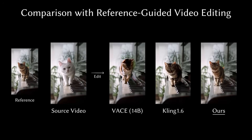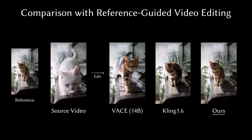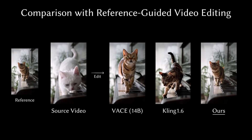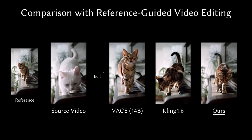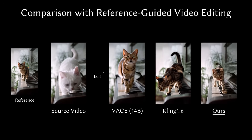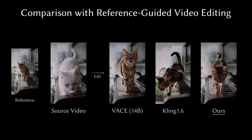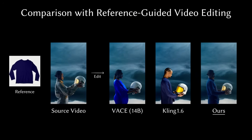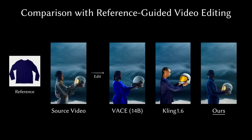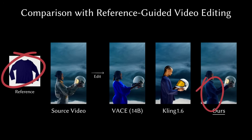Here's a comparison. You've got the input cat photo, the source video, and look how LoRaEdit compares to VASE and CLING. Theirs look muddy and distorted, but LoRaEdit's result keeps the cat's fur pattern sharp and consistent. Plus, the way the cat moves is more similar to the source video compared to the rest. And again, changing the shirt — the other models just splash on some color, but LoRaEdit makes it look like a real textured shirt. It keeps the details perfectly.